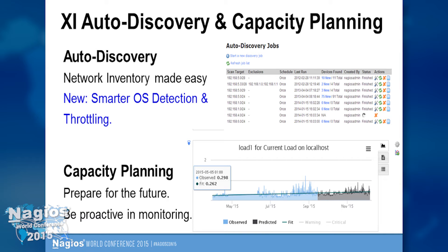Here's the capacity planning view. In blue, we've got existing performance data that XI has collected. In gray, XI is predicting what's likely to happen with that service based on what it already knows, with a couple of different algorithms you can choose based on the type of existing data. Knowing something is about to break in 30 or 90 days is a really useful tool. These graphs can be added to dashboards very easily so you can monitor critical services and what they're likely to do in the future.